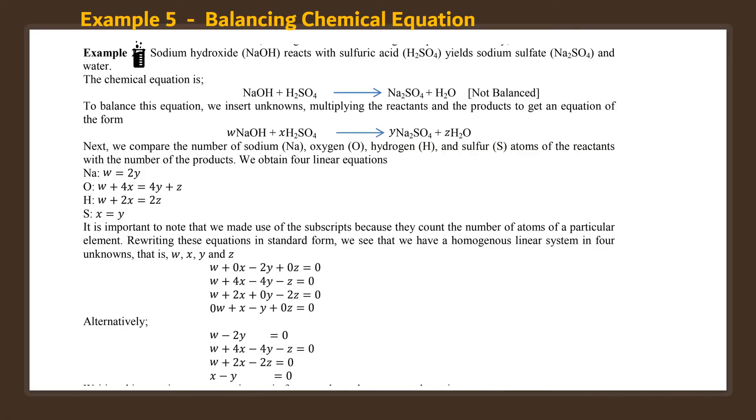Let's take the last example as balancing chemical equations. Let us say the sodium hydroxide reacts with sulfuric acid and it yields sodium sulfate and water. Using this equation, sodium hydroxide and sulfuric acid, that yields sodium sulfate plus water, H2O, which is not balanced. We have to balance this equation. We have to find the unknowns W, X, Y, and Z. So, let us take each component separately, sodium separately, oxygen, hydrogen, and sulfur, and try to balance this.